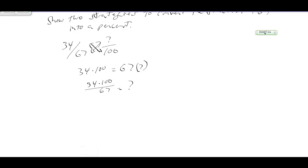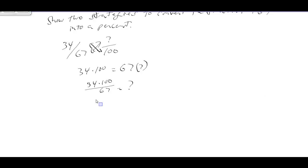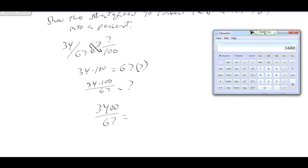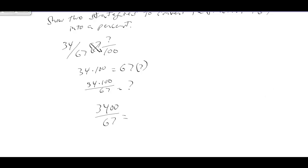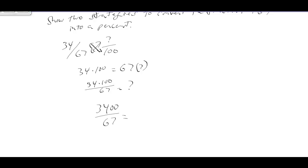Let's use the calculator to solve that: 34 times 100 divided by 67 equals 50.7 percent. That is strategy one.